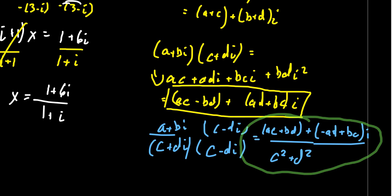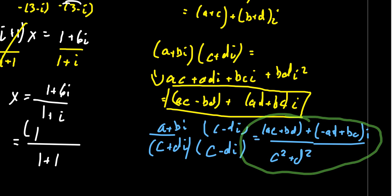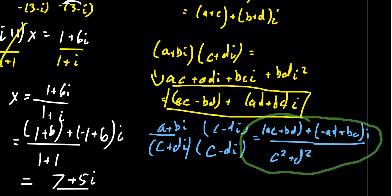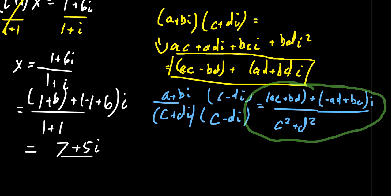In our example, working through the details: the denominator is 1 squared plus 1 squared, which is 2. In the numerator, ac plus bd gives 1 times 1 plus 6 times 1, which is 7. For the imaginary part, bc minus ad gives 6 times 1 minus 1 times 1, which is 5. So this simplifies to 7 plus 5i over 2. Written with real and imaginary parts separated: seven halves plus five halves i. This is the solution to the complex linear equation.